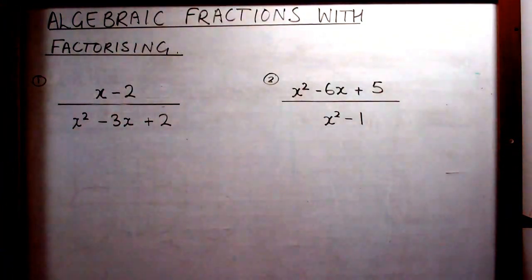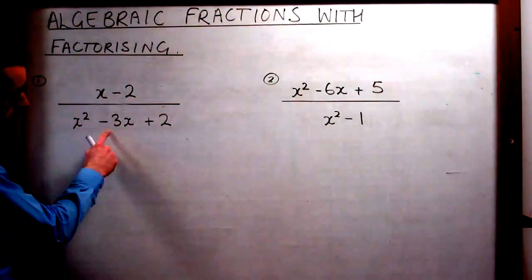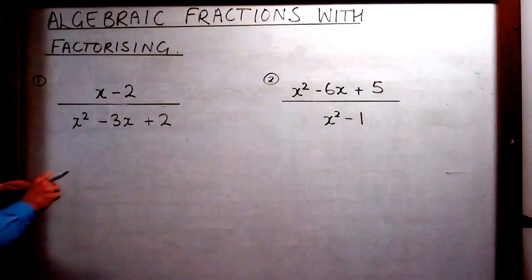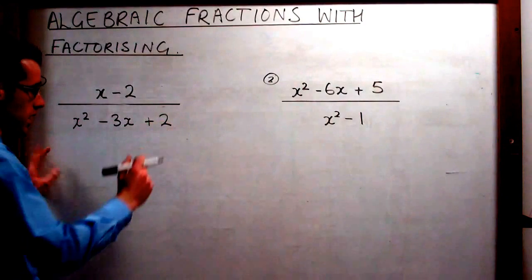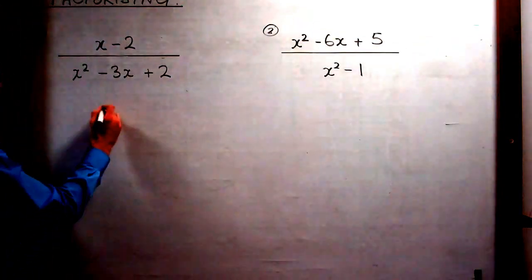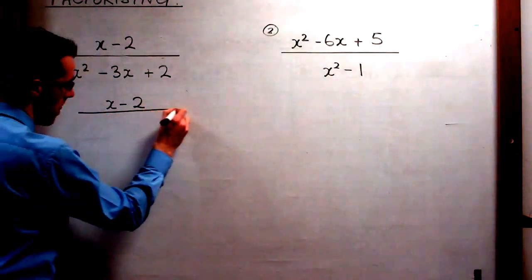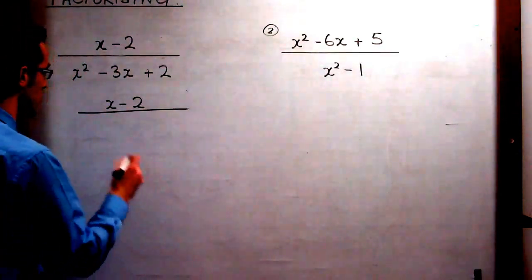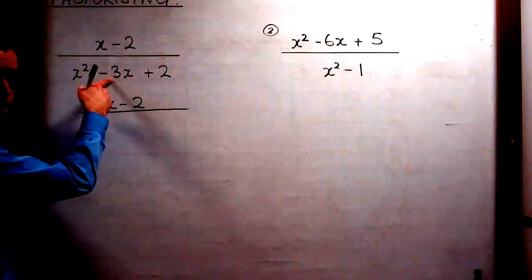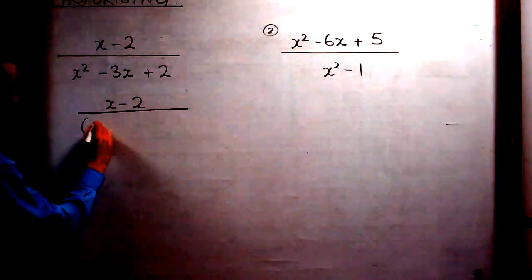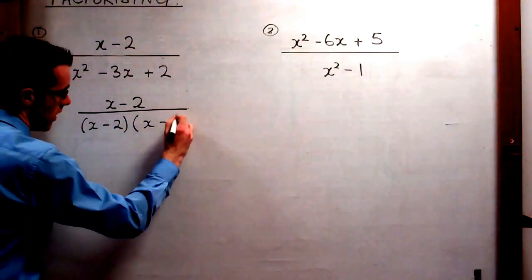Let's look at the first example. We have x minus 2 all over x squared minus 3x plus 2. We can't really do anything with the top line, so we're going to factorise the bottom line. We're going to be left with x minus 2 on the top, and on the bottom, it's factors of 2 that are going to make negative 3 when we add them together — so that's going to be negative 2 and negative 1.